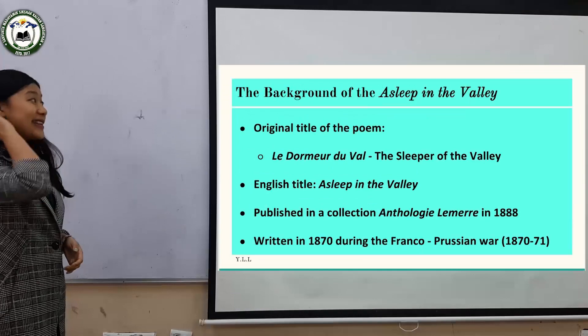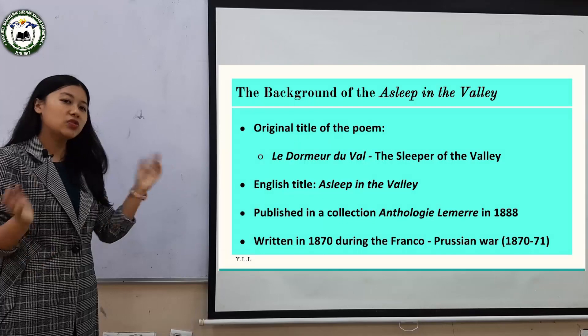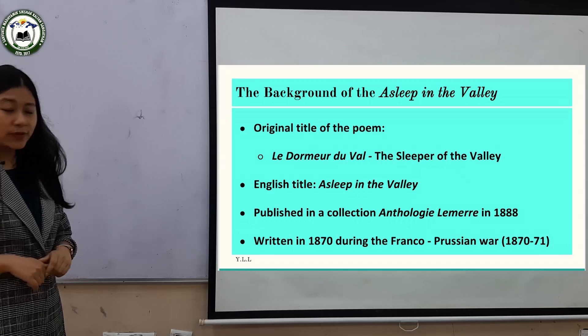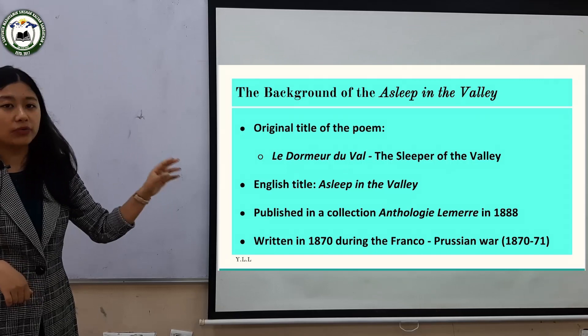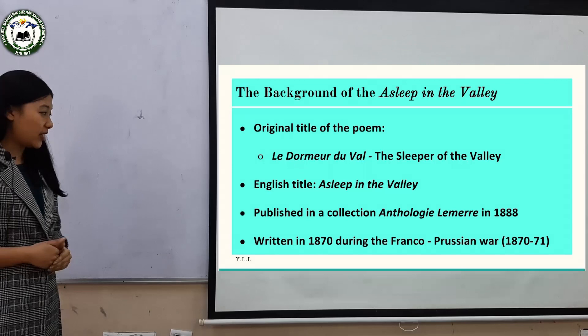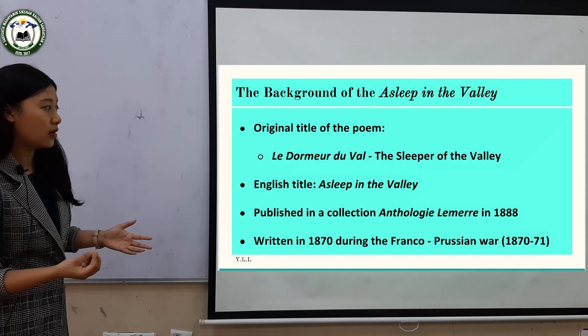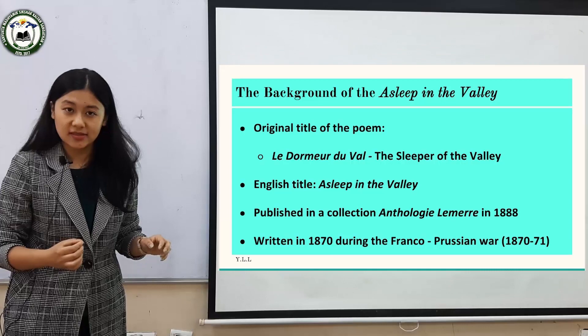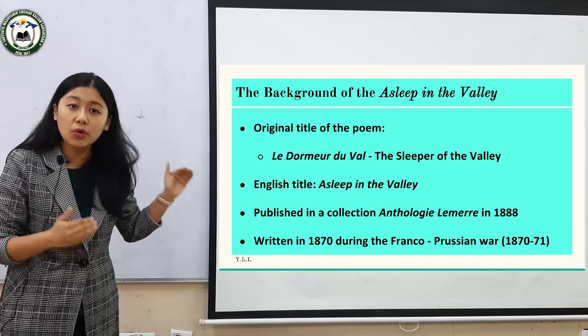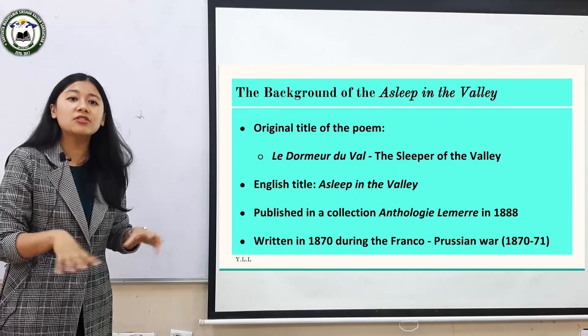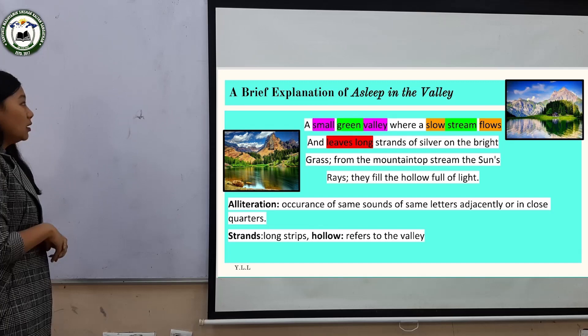Now let me give you a small background on 'Asleep in the Valley.' The original title of the poem was 'Le Dormeur du Val,' meaning 'The Sleeper of the Valley,' and its English title is 'Asleep in the Valley.' It was published in a collection called 'Anthologie Lemerre' in 1888, and it was written in 1870 during the Franco-Prussian War. This is very important — the writer witnessed this war and as a result wrote this poem. The poem is fashioned as a sonnet.